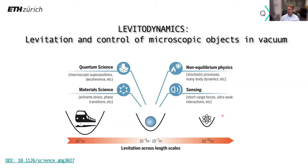Levitodynamics is levitation and control of microscopic objects in vacuum. Here you see levitation across the length scales. We know entire atomic physics is based on holding atoms and atomic clouds in place, trapping and cooling them. On the very macroscopic scale, levitation is a means to circumvent friction. This intermediate mesoscopic scale, 10 to the minus 4 to 10 to the minus 7 meters, is very attractive for different research questions.